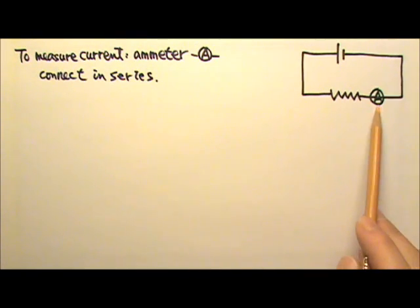We should connect the ammeter to the resistor in series so they get the same current.